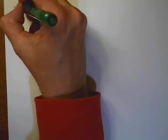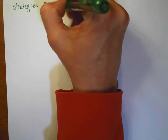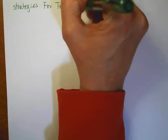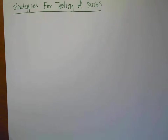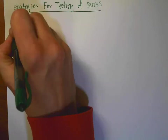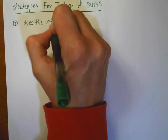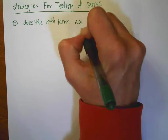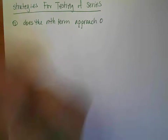So now what I want to do is write a list of strategies for our testing of series — maybe a nice condensed version of things you're going to need for the project that's coming up. So maybe the first thing to know is: does the nth term approach 0? And that would be our nth term test.